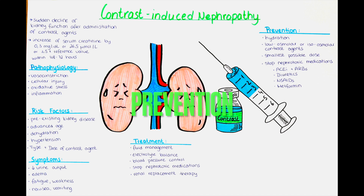How can we prevent contrast-induced nephropathy? Preventive measures are crucial in patients at risk. Ensuring adequate hydration before and after the procedure can help flush out the contrast agent and minimize its concentration in the kidneys. Using low osmolar or iso-osmolar contrast agents may be less nephrotoxic compared to high osmolar agents.